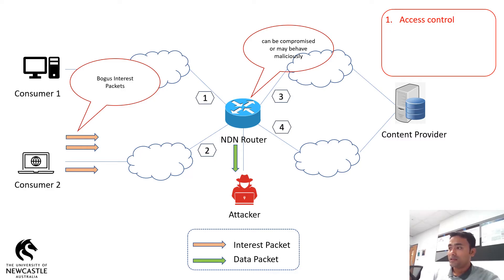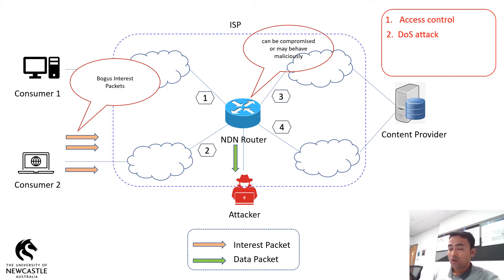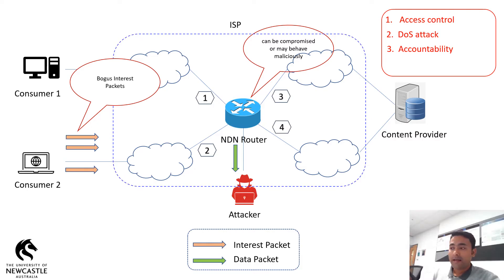It may also happen that some malicious consumer or attacker sends bogus interest packets to flood the network, which can adversely affect the services to genuine consumers. As such, denial of service attack is another important issue in NDN. Another important requirement is ISP accountability. Due to the cache property of the routers, the ISP plays an important role by providing services to consumers without contacting the content provider. As such, it is very hard for the content provider to know the exact services that have been provided by the ISP.